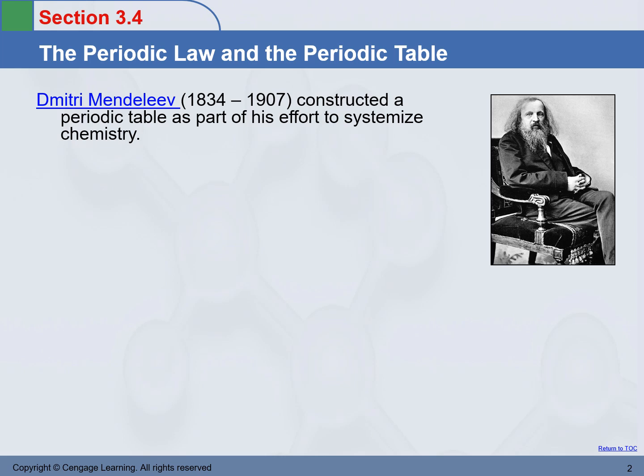Professor Mendeleev was a Russian scientist, a professor in chemistry. At his time, chemistry was taught basically element by element — students had to memorize the chemistry of each individual element. That was not an easy job to do at all.